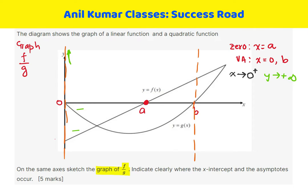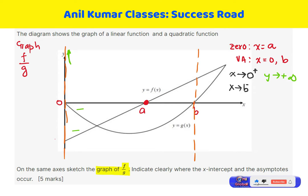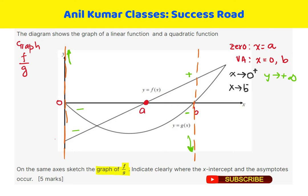On the right-hand side, as x approaches B from the left side, let us look into the sign of both the graphs. We have the linear function as positive and the parabola as negative. Positive divided by negative means negative, and therefore the function will approach negative infinity. So Y approaches negative infinity.